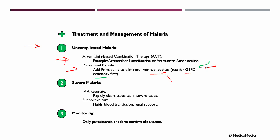In severe malaria, we give IV artesunate, which rapidly clears parasites in severe cases, along with supportive care such as fluids, blood transfusion if needed, and renal support. We then monitor with daily parasitemia checks to confirm clearance.